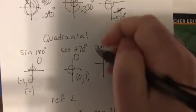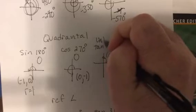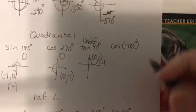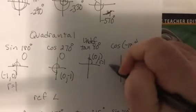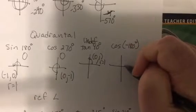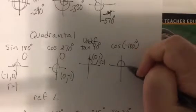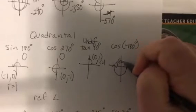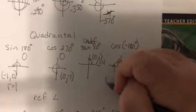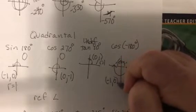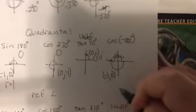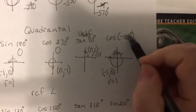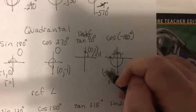And then cosine of negative 180. Oops, wrong way, negative 180 would be here. Sorry wrong way. So that would be a negative one zero, r is one. Cosine is x over r, so it'd be negative one over one, so it'd be negative one.